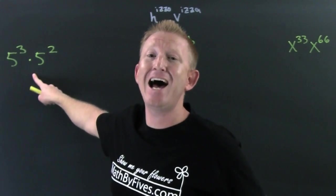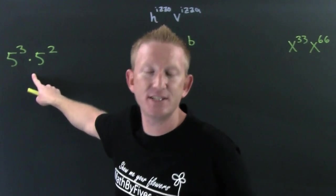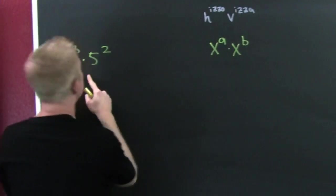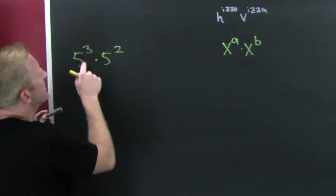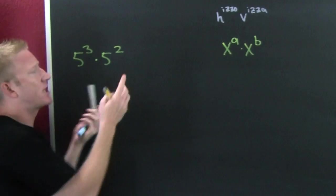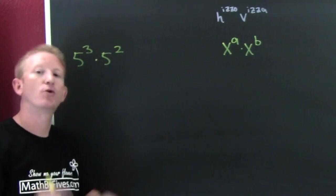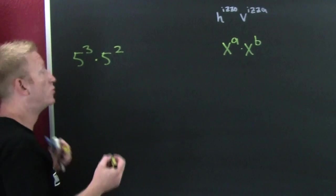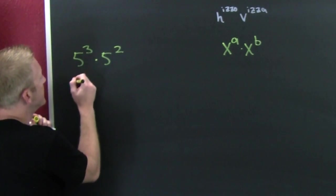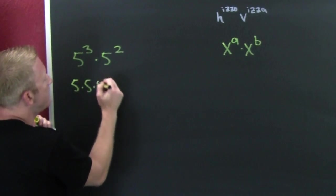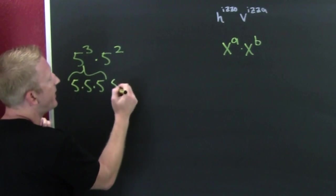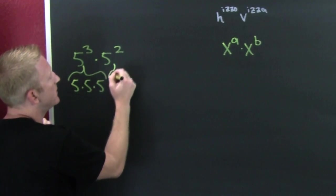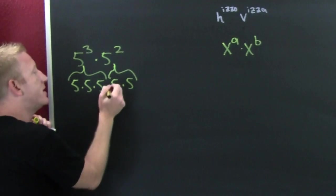Before we get to that, let's expand these guys. This is 5 to the third and 5 to the second - they have the same base so we want to rewrite them in a more compact notation using the power rule. Five times five times five three times, and then five times five two times.